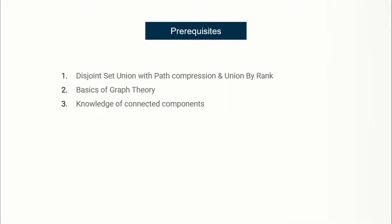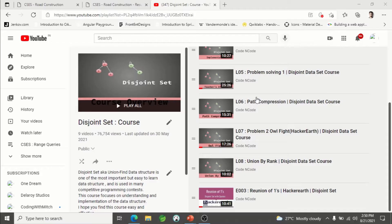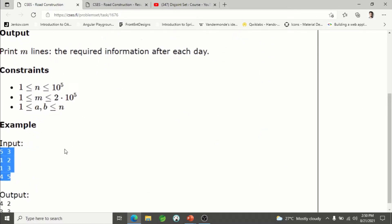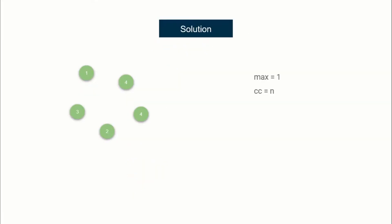The way we'll solve this problem is with two variables: 'max' and 'connected component count'. Max will store the size of the largest connected component, and CC will store the number of connected components. Initially, since there are no edges, all nodes form individual connected components, so CC is initialized to N. We'll process the input edges one by one. The input gives you N and M - number of nodes and edges - then each edge. After adding each edge, print the number of connected components and the size of the largest connected component.